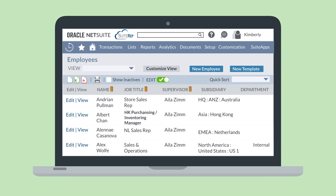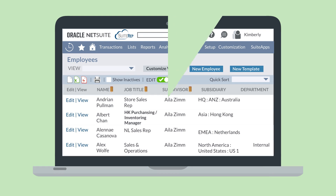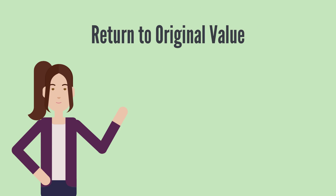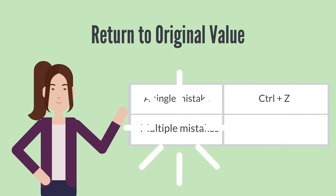In addition to its basic functionality, inline editing has some other helpful tools. First, if you realize that you made a mistake and would like to return a field to its original value, you can do that by selecting Ctrl-Z. And of course, if you make a series of mistakes in a row and need to access the original values for multiple fields, you can always find that information on the System Notes tab on each employee record.